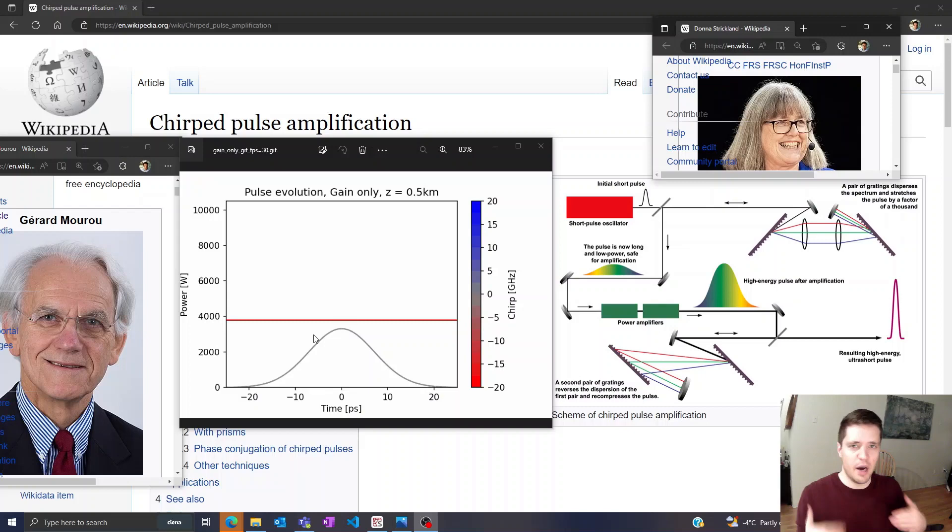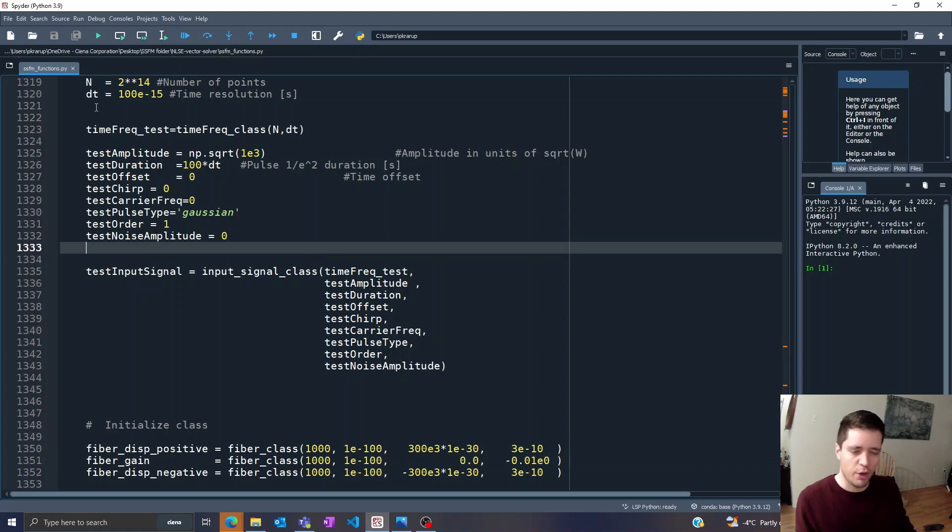So it would seem that the highest peak power we can achieve is limited by this damage threshold, but Moreau and Strickland found a way to circumvent this limitation. So I thought to explore that in a bit more detail.